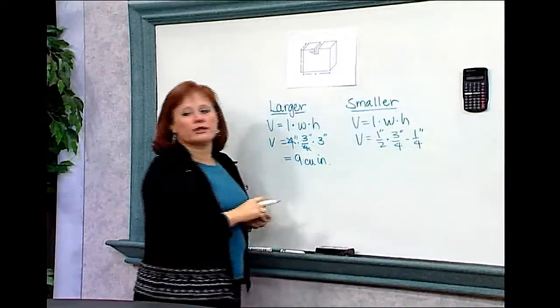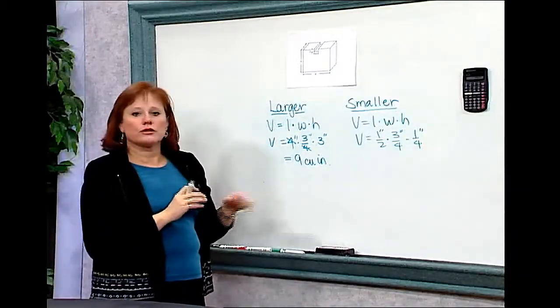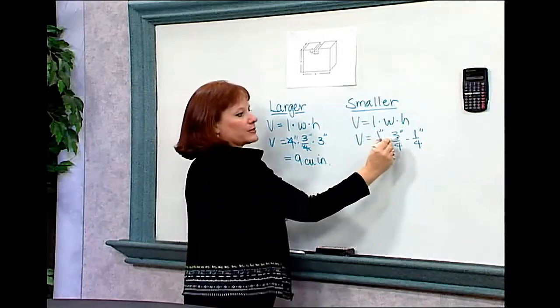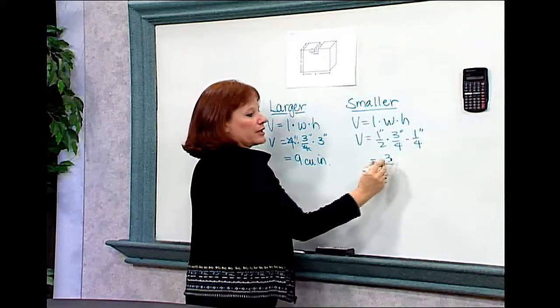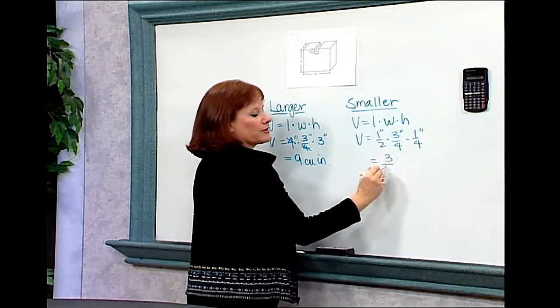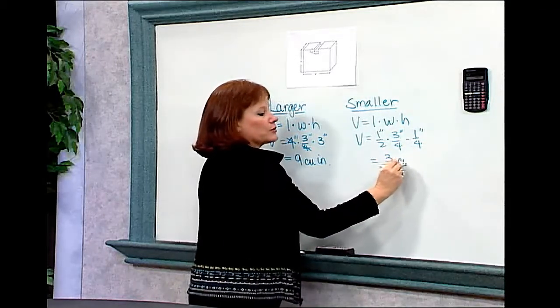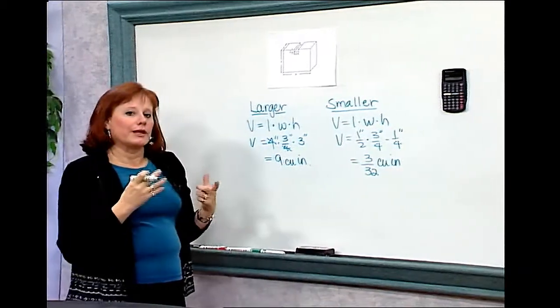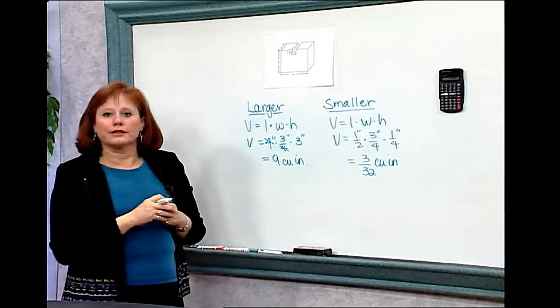Now you can choose to solve these problems either using fractions or using decimals, whichever one seems most appropriate. In this case, I have 1 times 3 times 1, which is 3, over 2 times 4 times 4, which is 32. This would give me 3/32 of a cubic inch. I don't really know what that means, so I want to do this as a decimal instead.